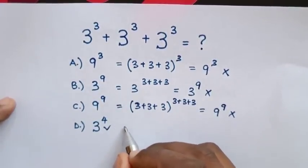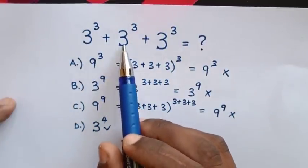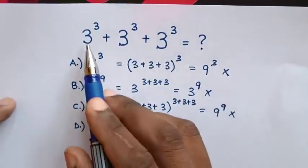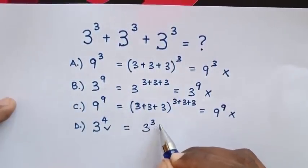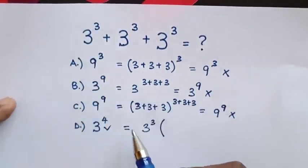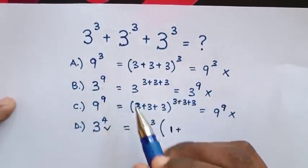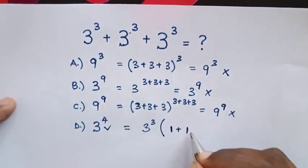How we got D: from our question, 3³ + 3³ + 3³, the term 3³ is common. So we take 3³ out of the bracket: 3³ times (1 + 1 + 1).